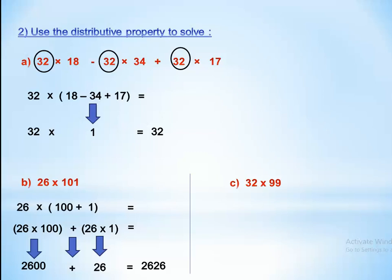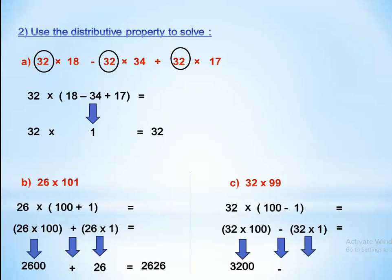For 32 by 99, we express 99 as 100 minus 1, so 32 by (100 minus 1) gives (32 by 100) minus (32 by 1), which equals 3200 minus 32 equals 3168. We use these properties to make addition or multiplication easier — decomposing numbers like 101 or 99 lets us solve more simply.